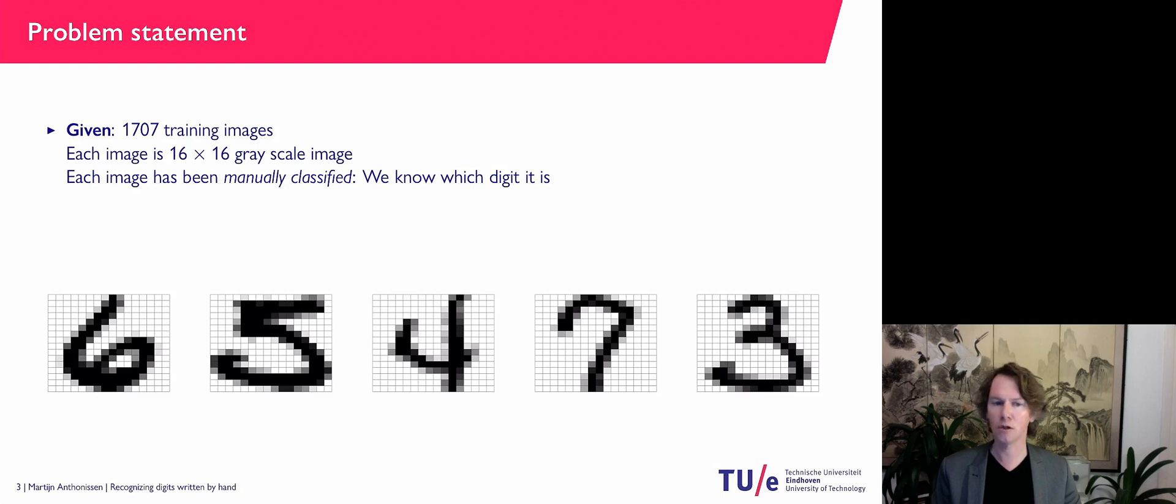Each image is a little bitmap 16 by 16 pixels. And every pixel is some grayscale image.